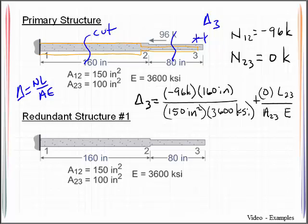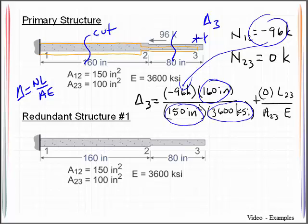This is using the well-known relationship that says delta is equal to NL over AE. So I take the internal axial forces, plug it in. Here's the length of the member, the cross-sectional area of the member, modulus of the member. For member 2-3, the internal axial is zero. And so when I solve this out, I get delta 3 is equal to negative 0.0284 inches.